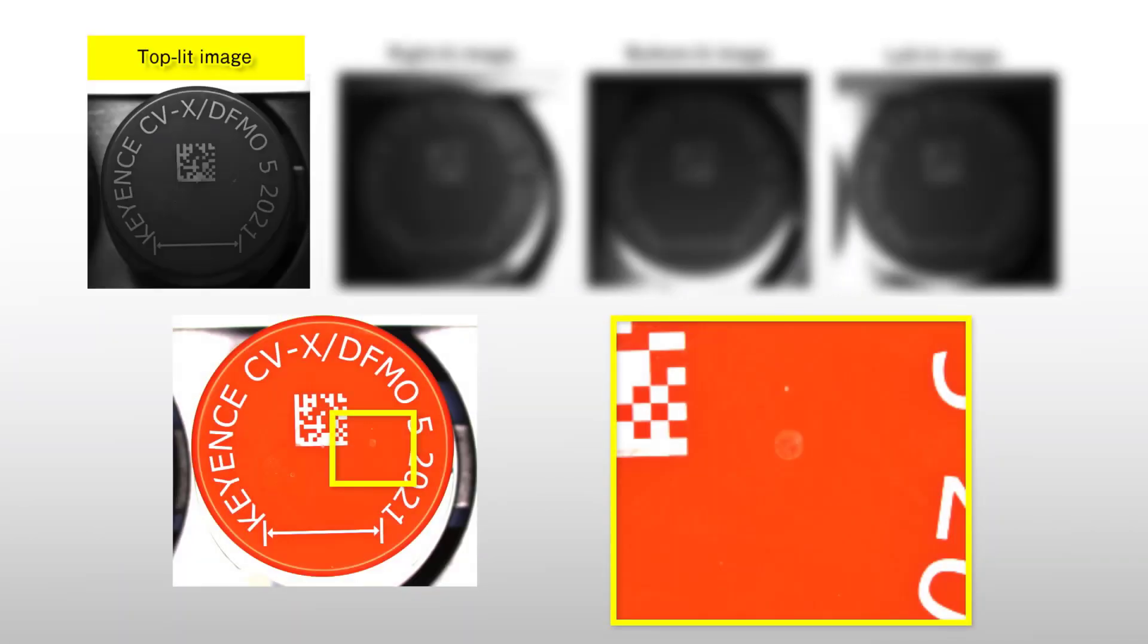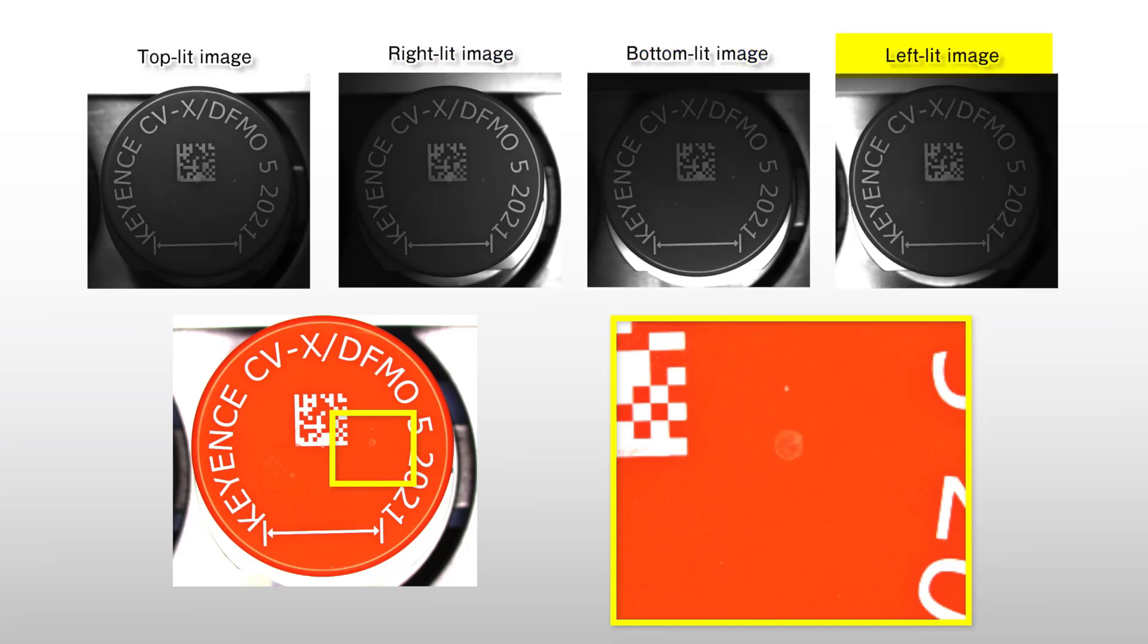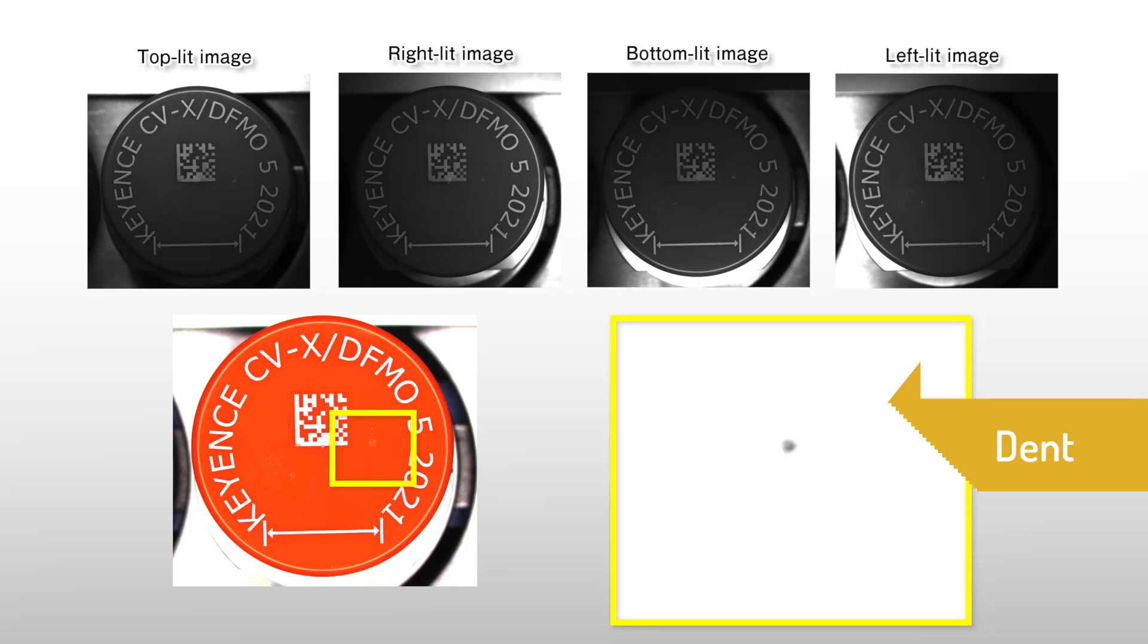As we see here, separate images are taken with directional lighting and how shadows are cast onto the part gives detail on the topographical changes of the surface. This is how we're able to isolate the dent and inspect it as a defect.